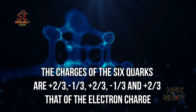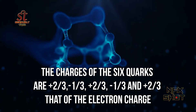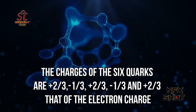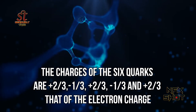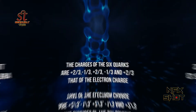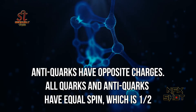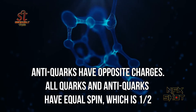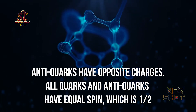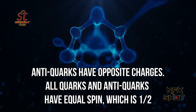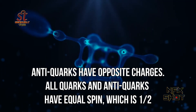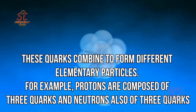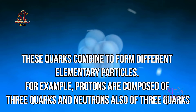and +2/3 that of the electron charge. Anti-quarks have opposite charges. All quarks and anti-quarks have equal spin, which is 1/2.